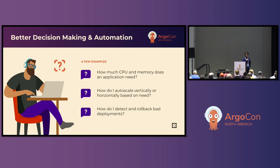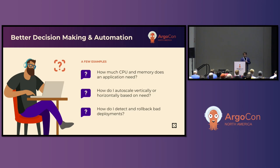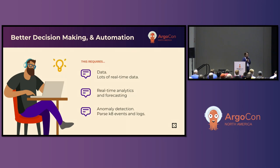What do we mean by better decision making? Well, basic questions like: I have a lot of applications running on my cluster — how much memory and CPU do they need? How do I auto-scale the application so that I don't have to manually configure the memory? When I do a deployment, how do I know the deployment is good and I should roll forward rather than roll back? In order to make these kind of decisions, you need a lot of ideally real-time data, and then you have to analyze the data and derive insights in order to take action.